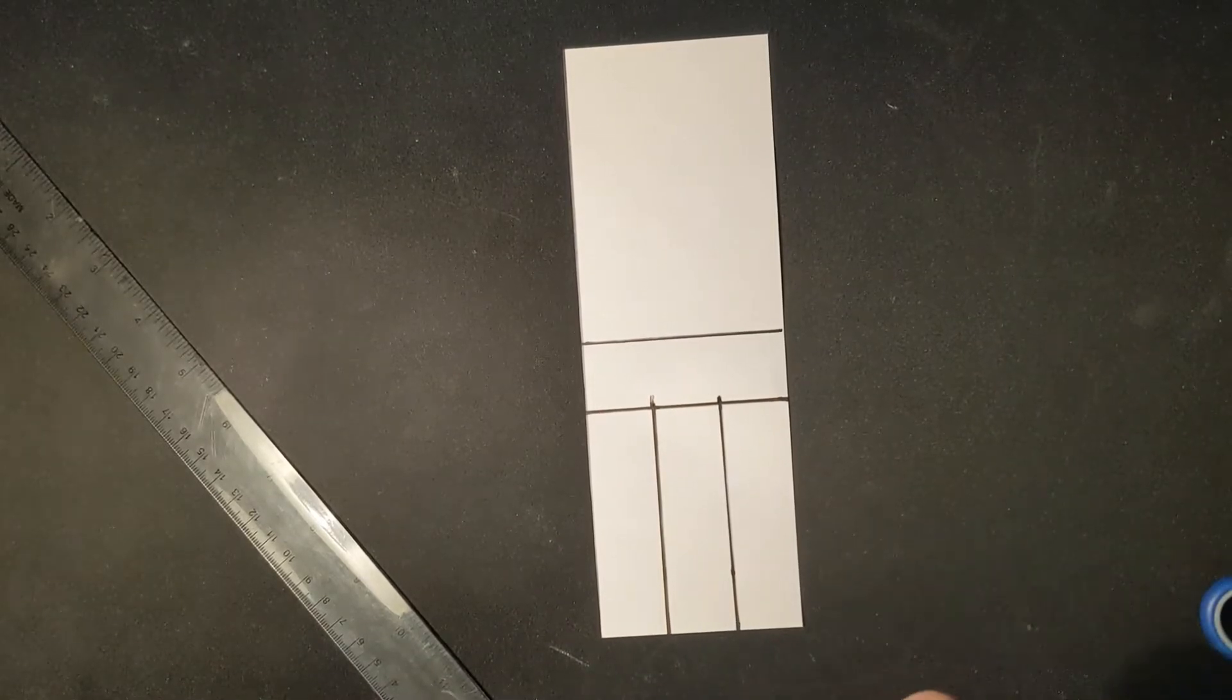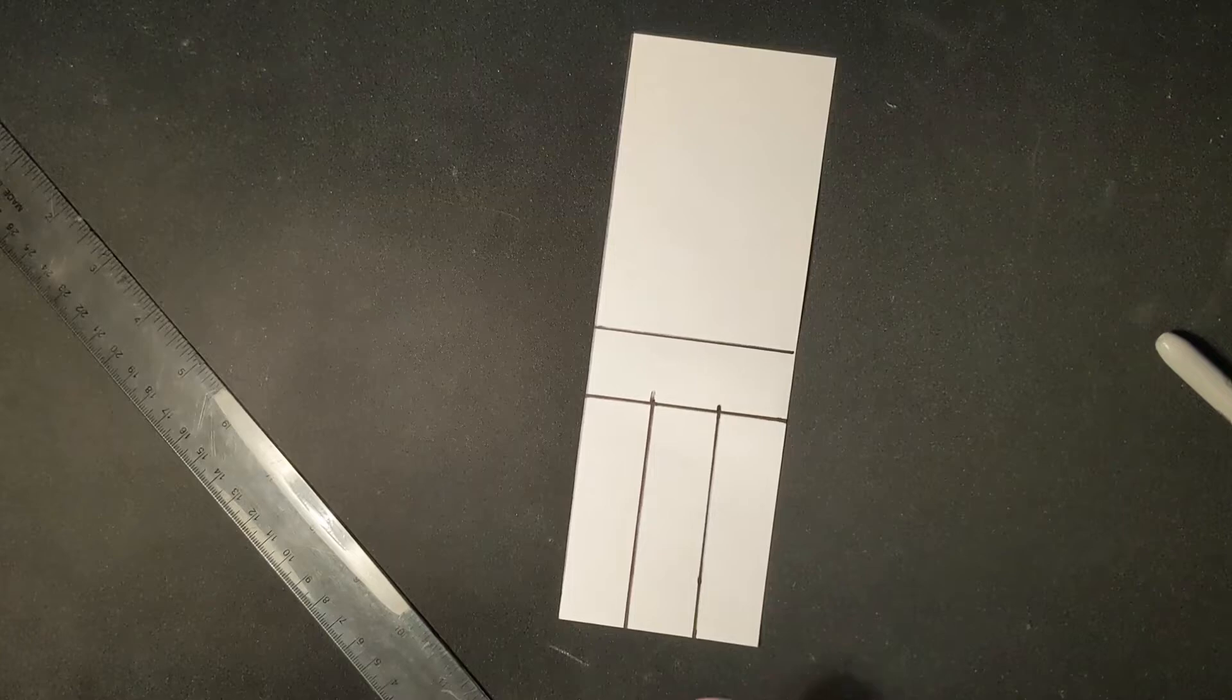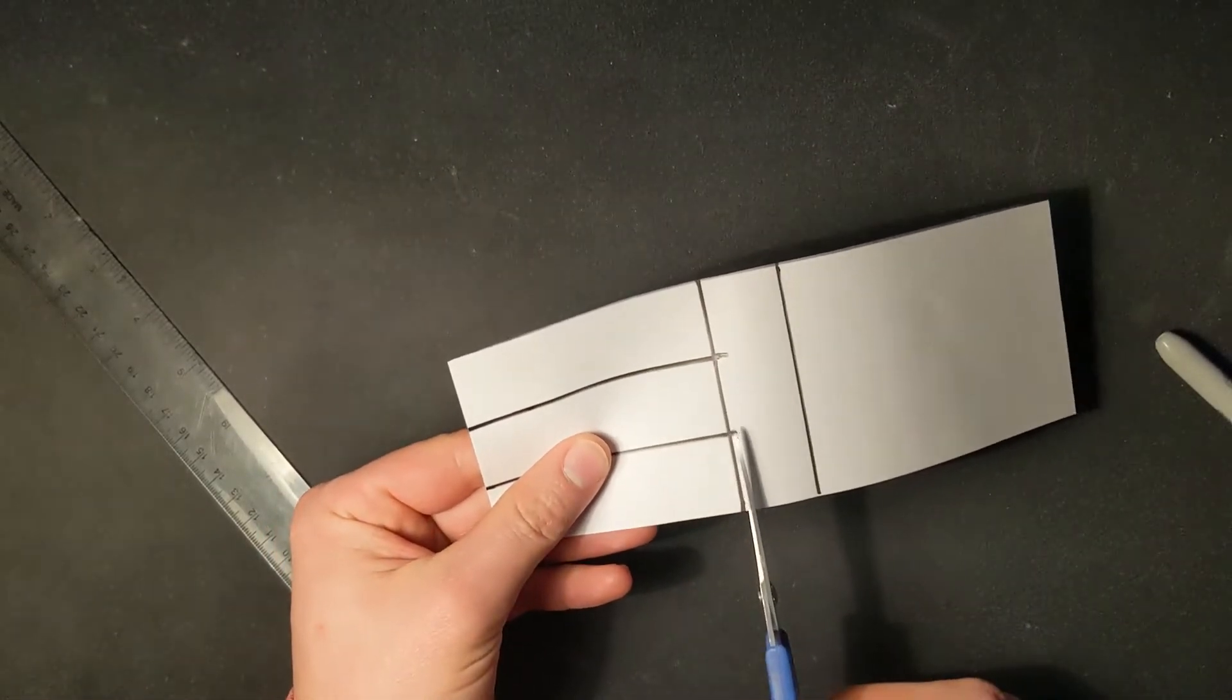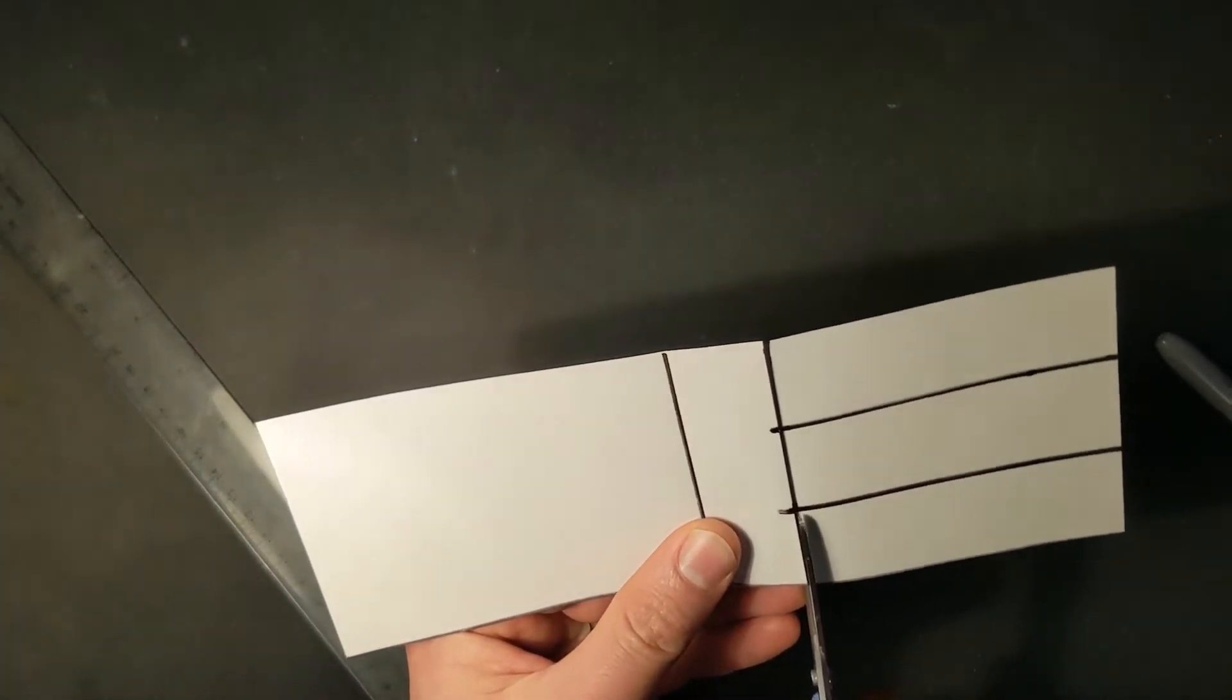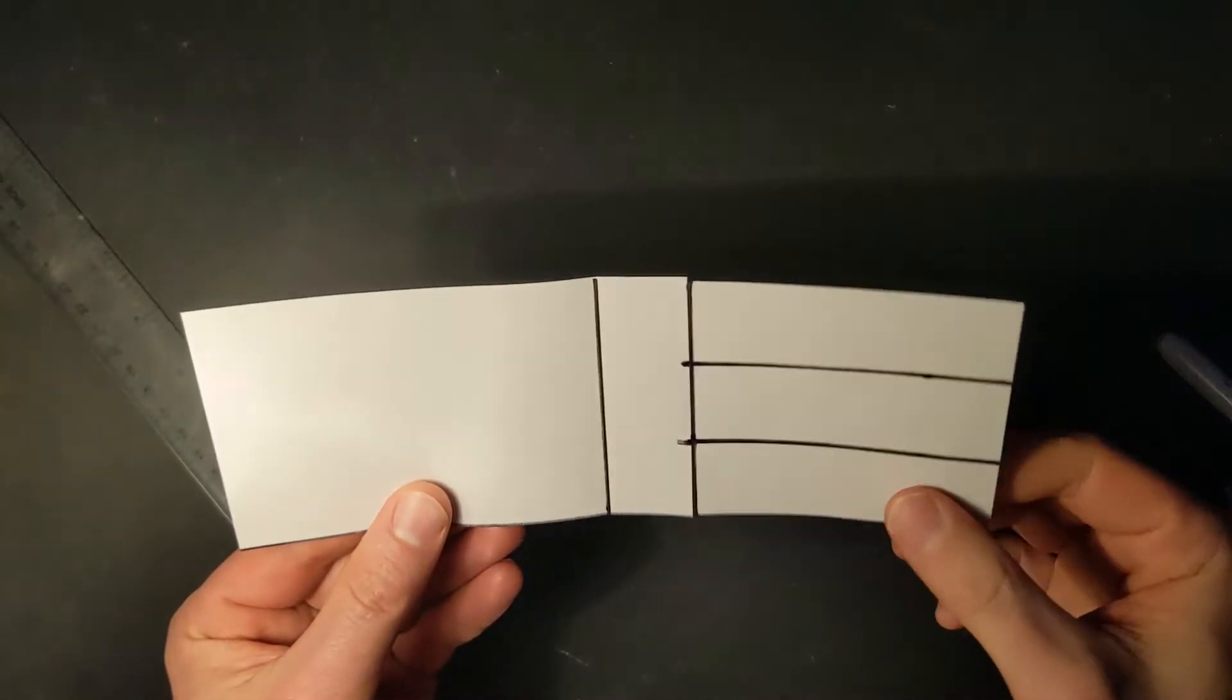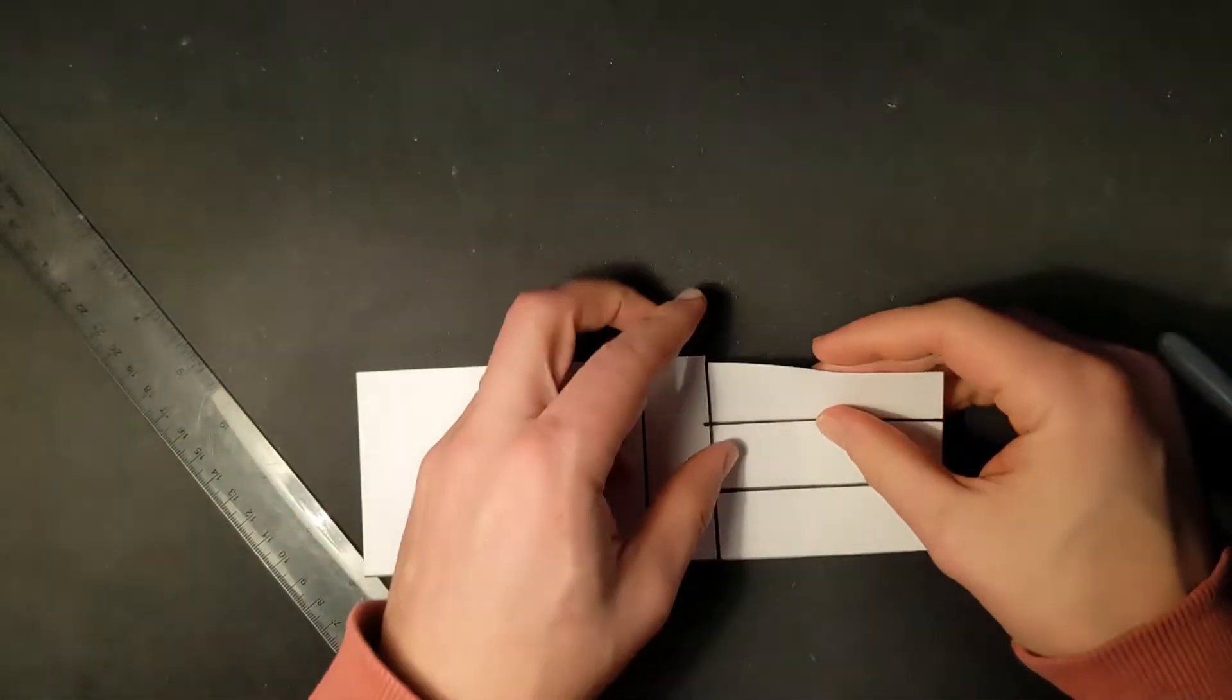I'm now going to cut in two places. I'm going to cut right here, and I'm going to cut right here. So I've just cut along those lines, so now these can be bent.